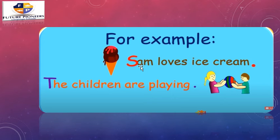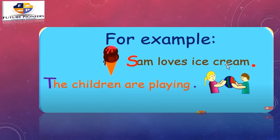Where is the subject and the verb? Sam here is the subject — we are talking about Sam and what he loves. What about the verb? Ice cream is not the verb. The verb here is 'loves.' That's correct, guys.